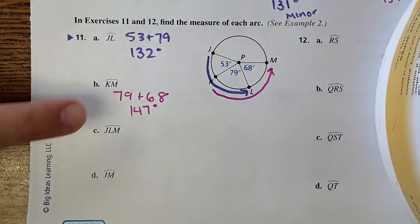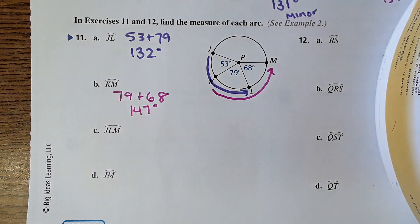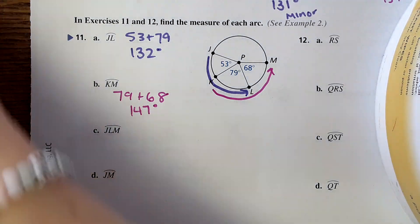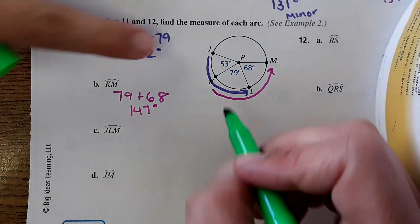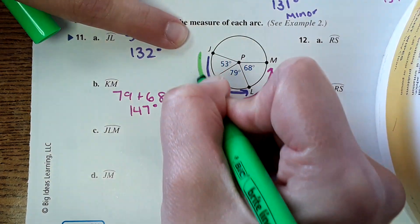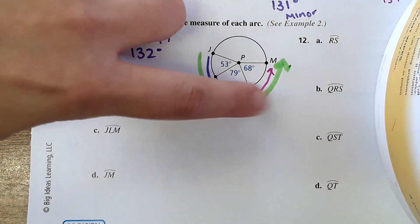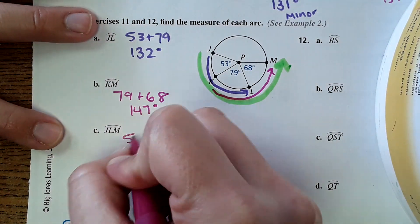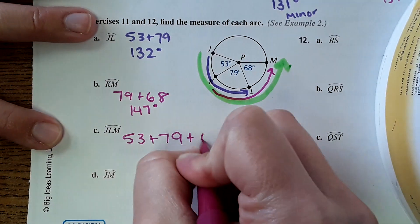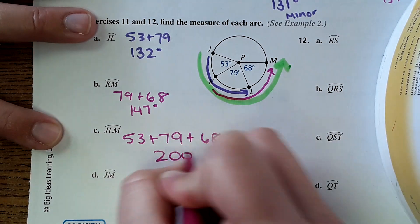Now they brought in a third letter, just like with angles we need to connect the dots. So let's see JLM, JLM wants us to go this way all the way around. Okay, so we have to add those three angles together. It comes out to 200 degrees.